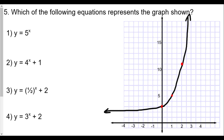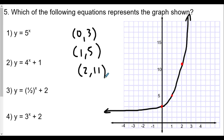Number five: which of the following equations represents the graph below? This is definitely an exponential function, and we have coordinates given: (0, 3), (1, 5), and (2, 11). We can plug these into each choice to see which one satisfies all three. For choice one, y = 5^x: does 3 equal 5 to the zero? No — 5^0 = 1, not 3 — so it can't be this one.